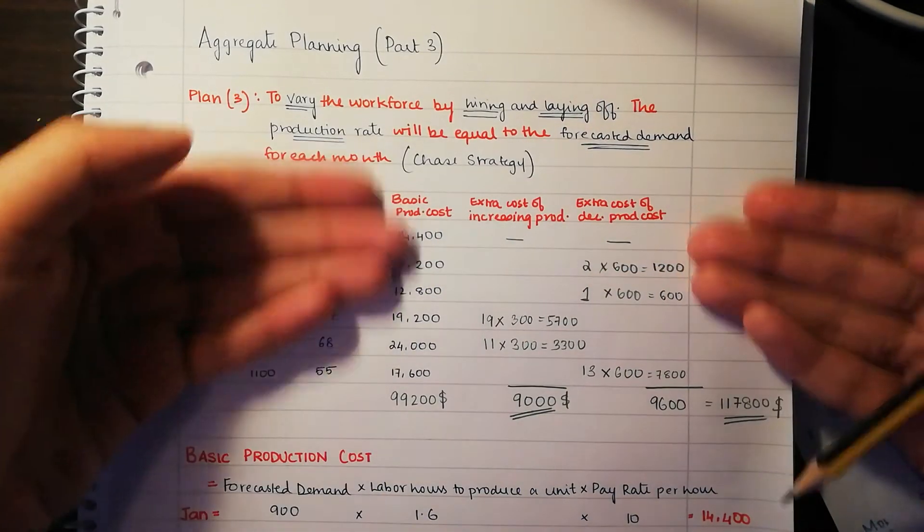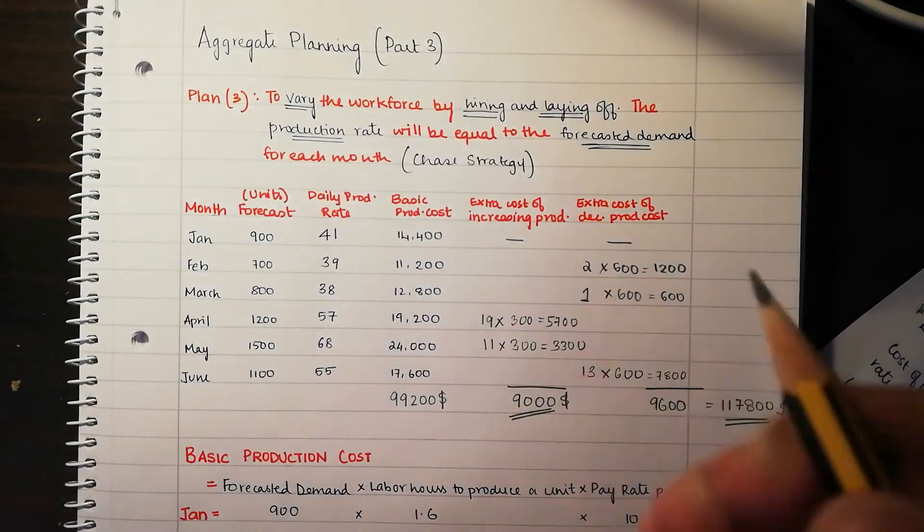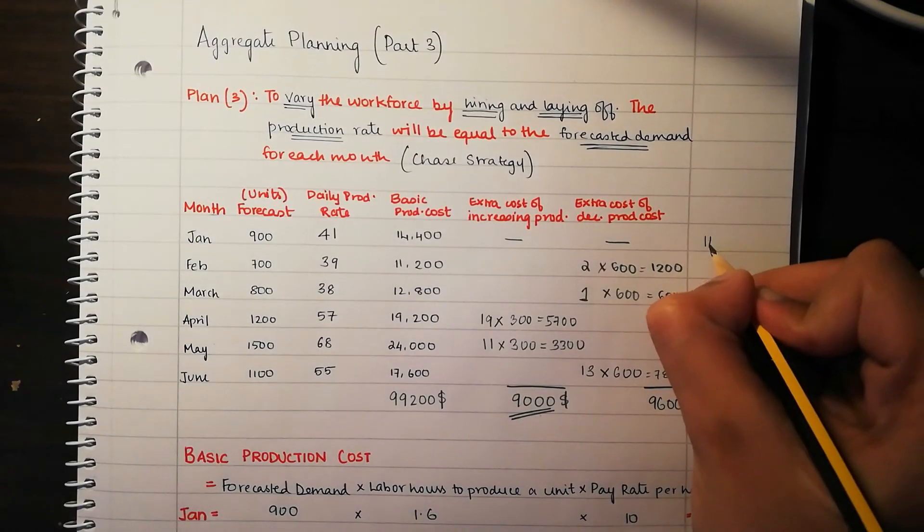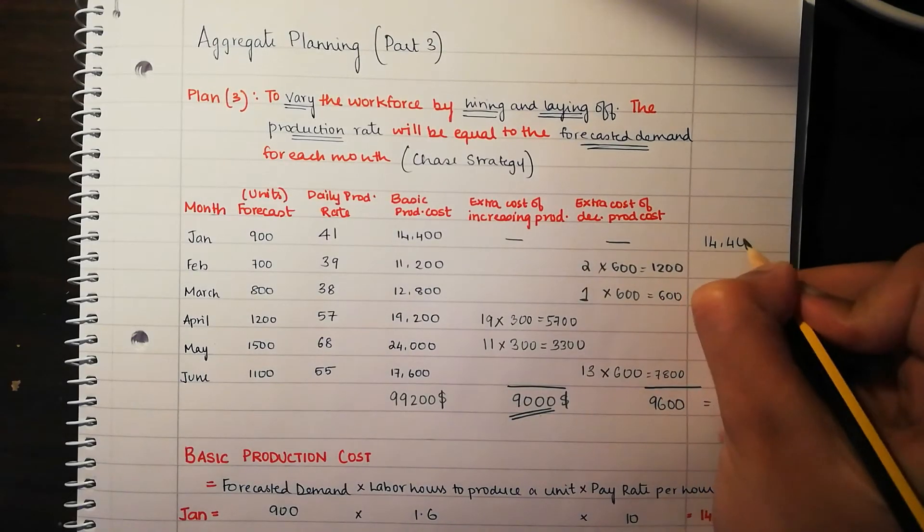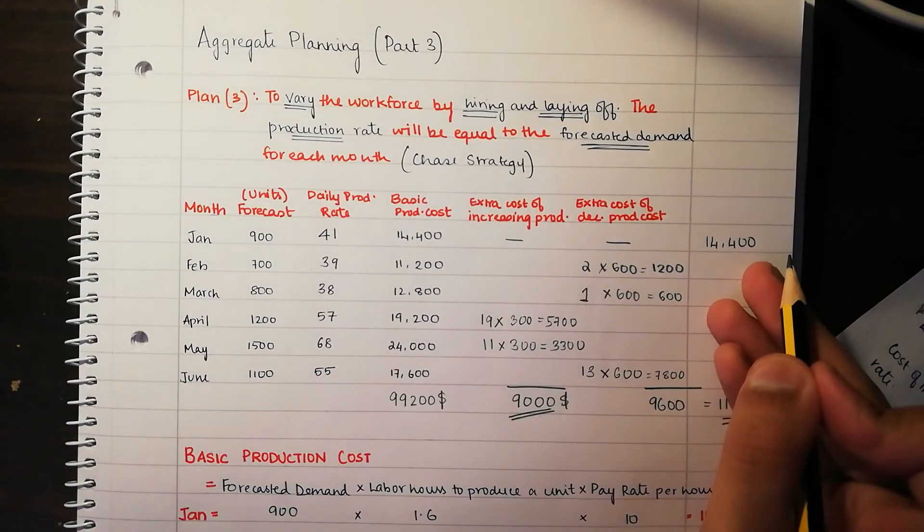The other way is to, we went from top to bottom, so you can go from side to side. You can go by month-wise, basically what I was trying to say. You can go $14,400 for Jan because there's no change from December. There's nothing to compare it to. So it's just $14,400.